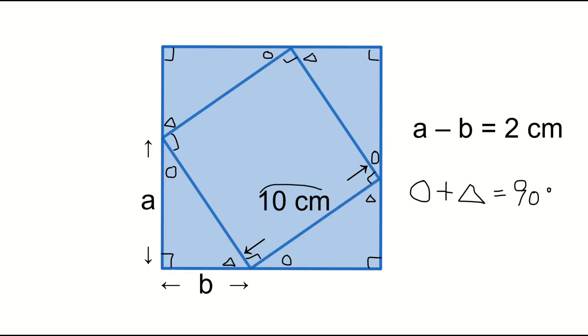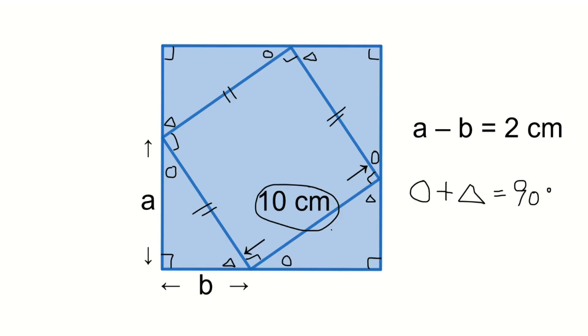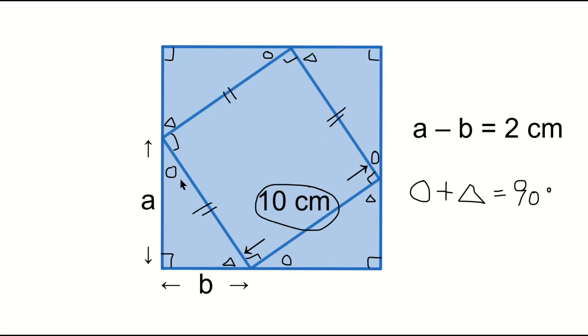In addition, each hypotenuse is the same, 10 centimeters. All the angles are the same, and the length of a line segment is the same. So, these four triangles are congruent.